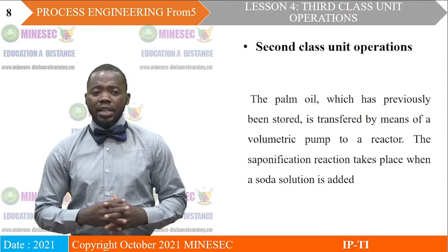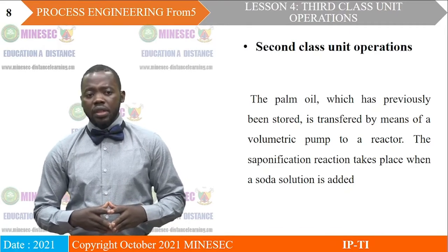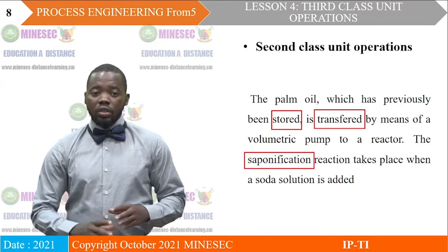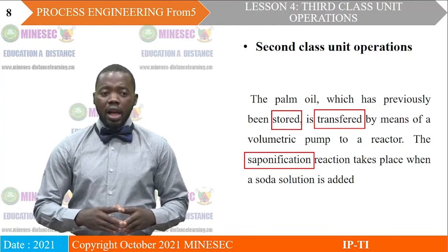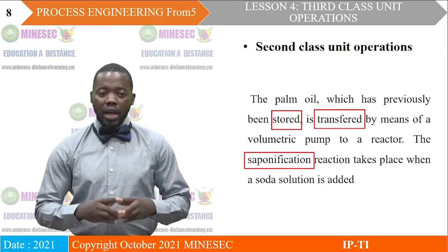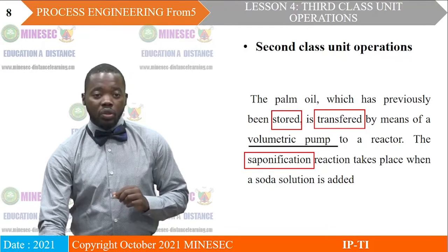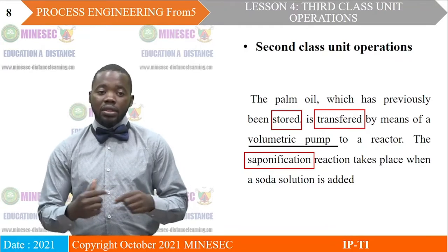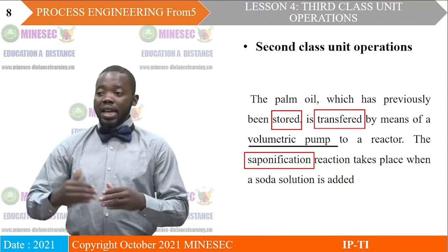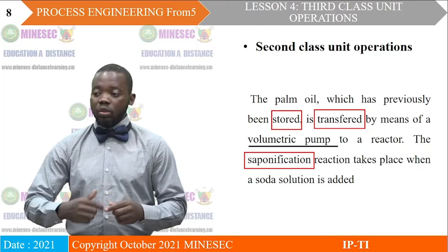Before we perform this identification, we need to identify all the unit operations that are involved in the process description. The unit operations involved are associated with the action verbs: stored, transferred. We have the saponification reaction as one unit operation. With the volumetric pump — transferred by volumetric pump — it simply tells us that here it is pumping. Whenever you see such a transfer and they specify the means by which the fluid or solid is being transferred, we give the name that corresponds to that unit operation.